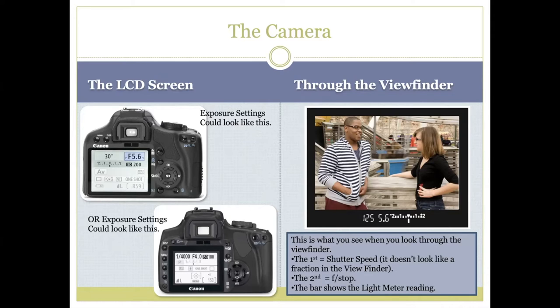Once you understand some of the vocabulary of photography, you'll be able to identify the buttons on the back of your camera. Also be sure to do a Google search for your camera's style and brand — there are videos online on YouTube or from the brand's website that will go over camera buttons and functions.